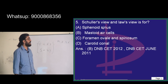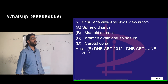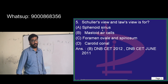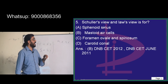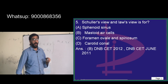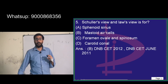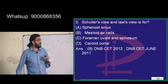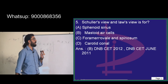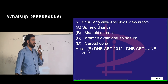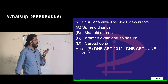For the sphenoid sinus, whether it is normal or not, you should go for a lateral view or a CT scan of the paranasal sinuses — axial, coronal, and sagittal cuts. For mastoid air cells, as already seen, Schüller's view and Law's view are two different views.